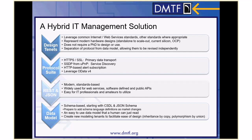All of that meant describing an easy-to-use data model that a human can just read without consulting the schema except for complex problems. And we created new modeling design tenants to facilitate ease of design and ease of use — things like inheritance by copy and polymorphism by union, which are covered in another video. Those design tenants were important to the overall success.